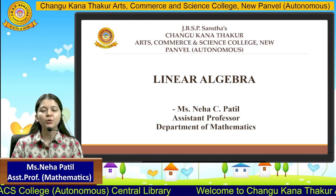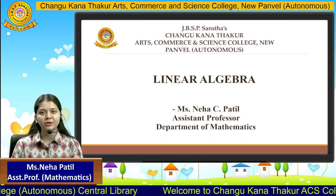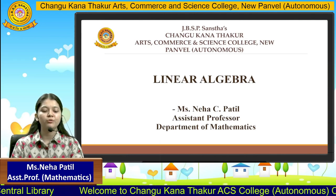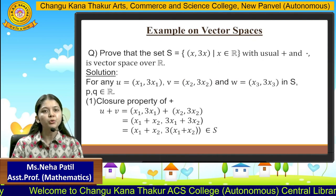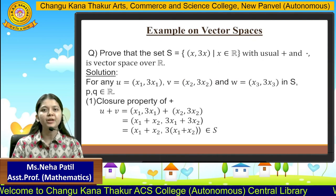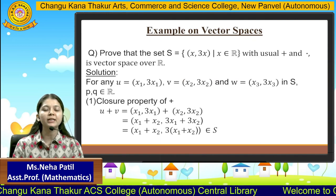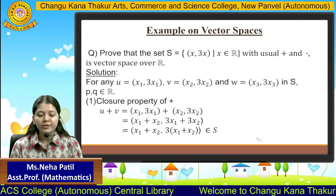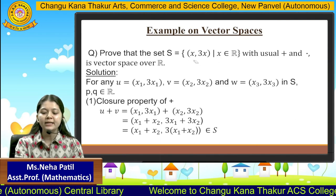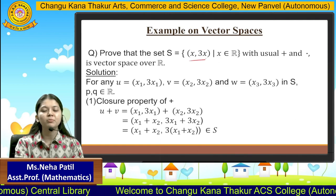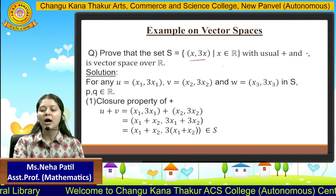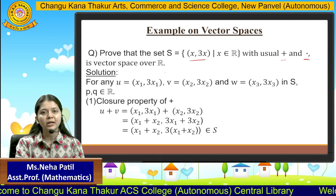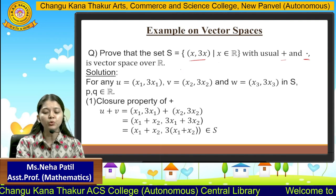Hello students! In the last session, we have seen the definition of vector spaces. Now, in today's session, we will see an example of vector space. In order to prove any set to be a vector space, we have to check all the 10 properties one by one, and those should be satisfied by that particular set. Let's take this example: prove that the set S, equal to the set of the form (x, 3x) where x belongs to real numbers, under the operations of addition and scalar multiplication, is a vector space over real numbers.